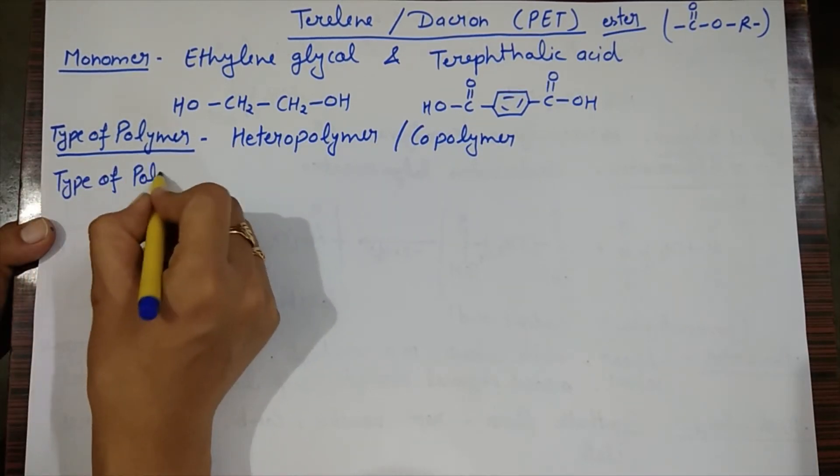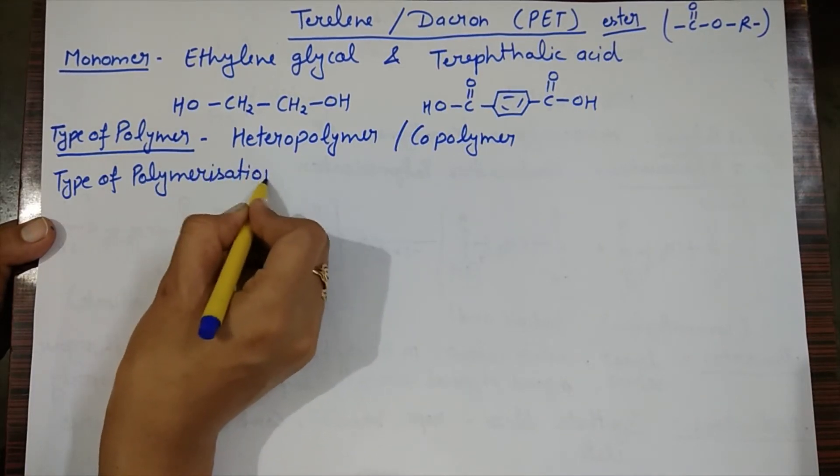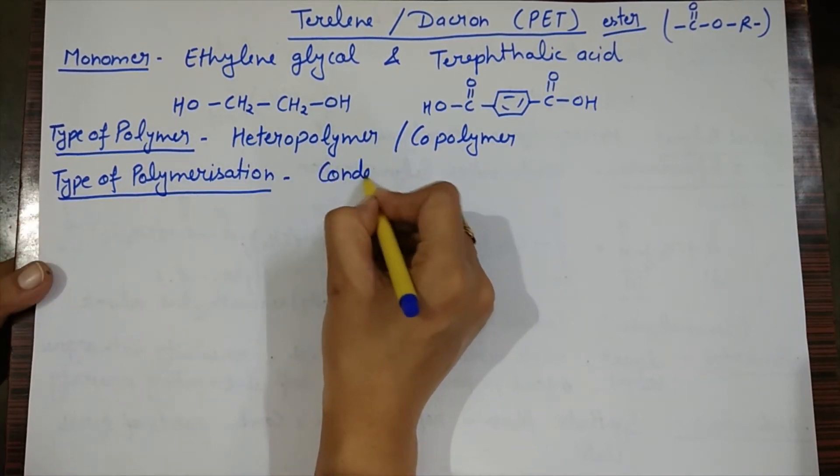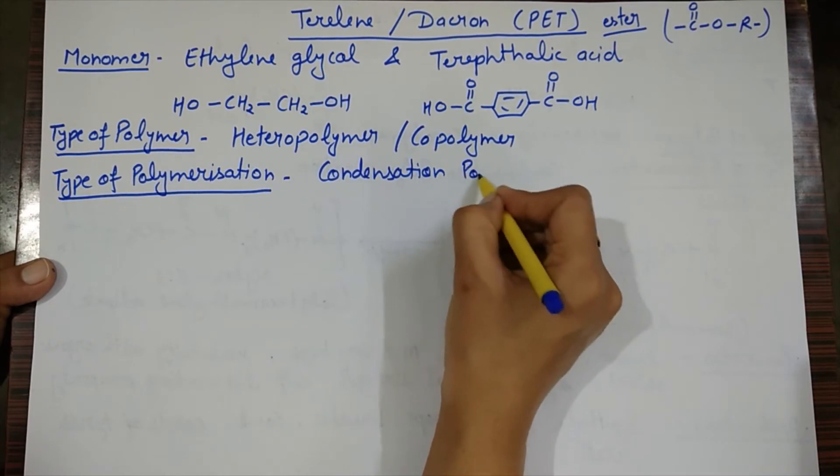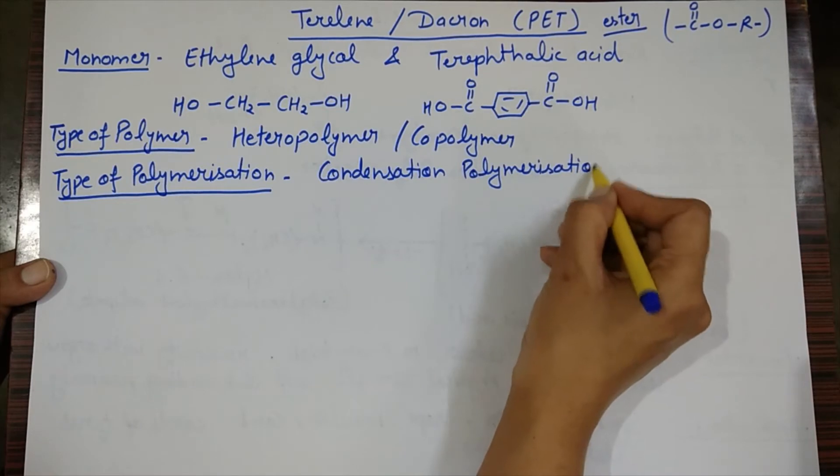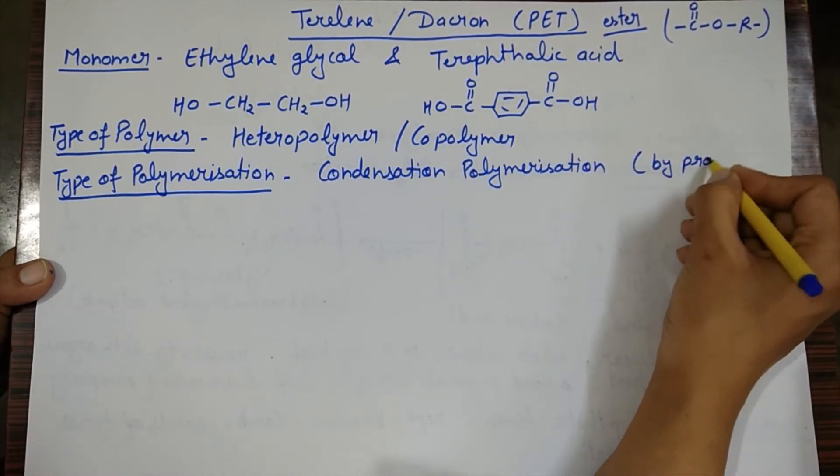So here we will follow the same condition. What do you think? How is the polymerization? Condensation polymerization. So this polymer formation is by condensation polymerization. There will be a byproduct formed in this polymerization.